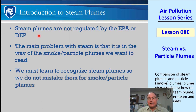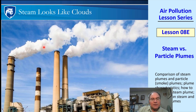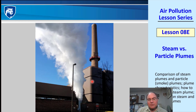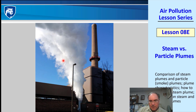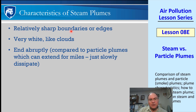Steam plumes are not regulated by the EPA or any other government agency like DEP. The main problem with steam is that it gets in the way of the smoke or particle plumes that we want to read. So we have to learn to recognize steam plumes so we don't mistake them for smoke or particle plumes. Steam plumes look a lot like clouds — they're white and fluffy. They have relatively sharp boundaries or edges, they're white like clouds, and they end abruptly, compared to particle plumes which can extend for miles and just slowly dissipate.